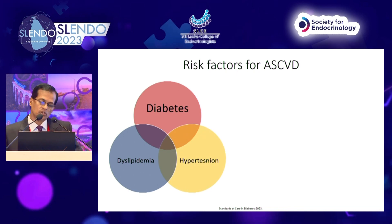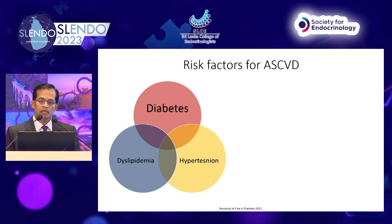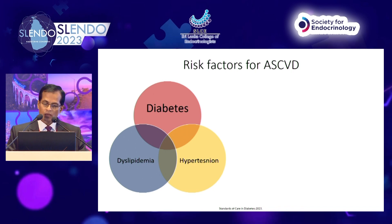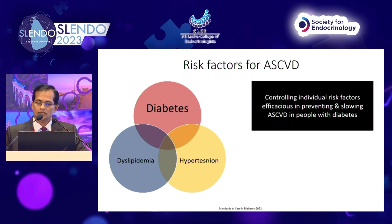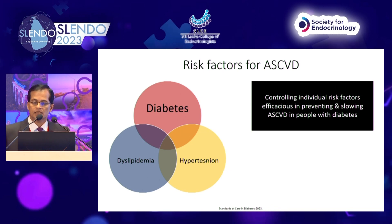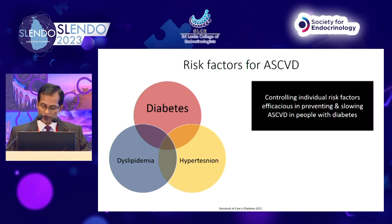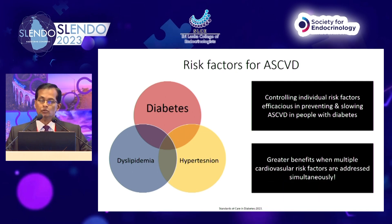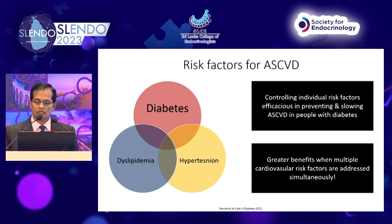If you have a diabetic patient, more than 50% of our patients have multiple risk factors together, therefore they have a huge cardiovascular risk. You can control individual risk factors efficaciously in preventing and slowing ASCVD in people with diabetes, but the greater benefit comes when multiple cardiovascular risk factors are addressed simultaneously.